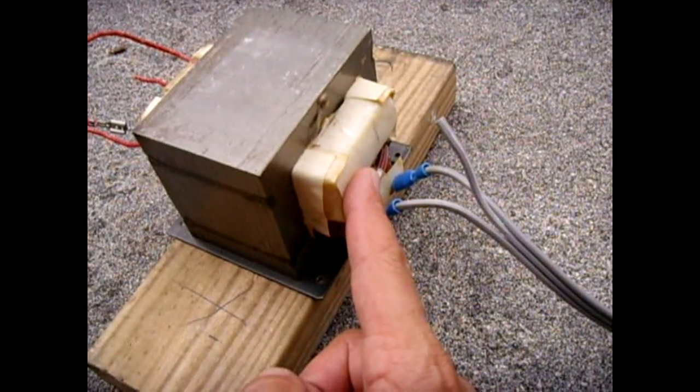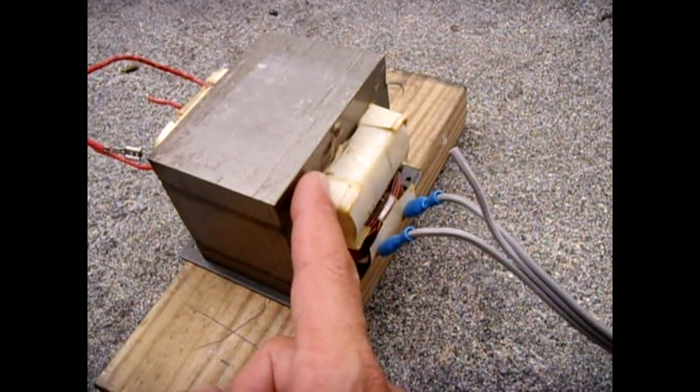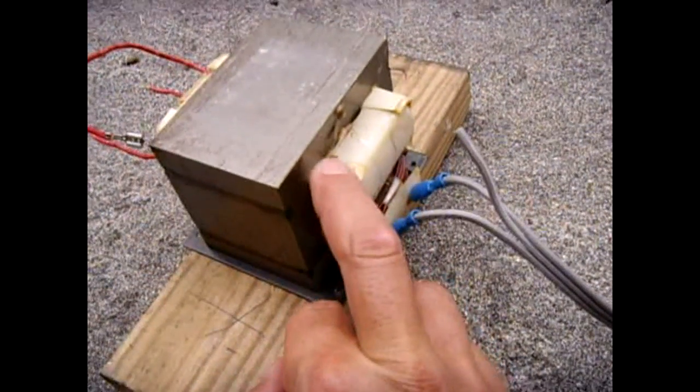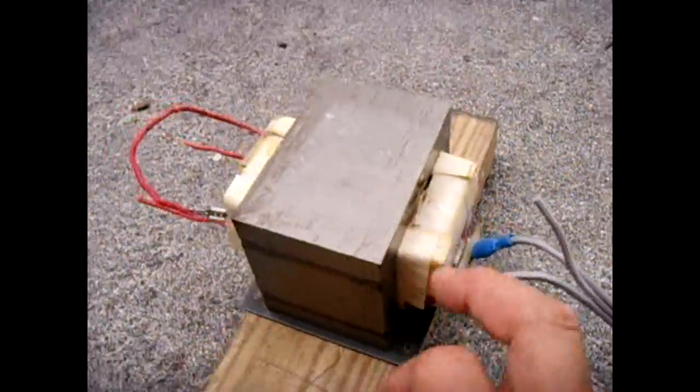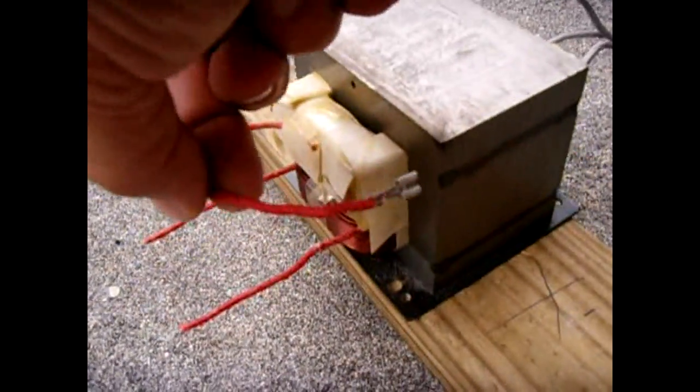Now one side of the secondary winding is attached directly to the e-core. You can see it riveted with that very thin wire. Appears to be maybe 28 gauge and the other side of that high voltage winding is this wire right here.